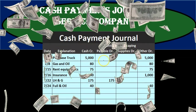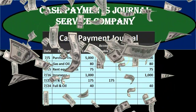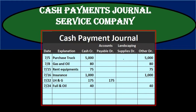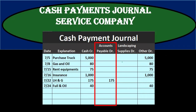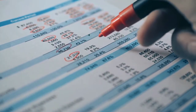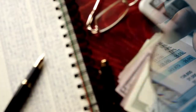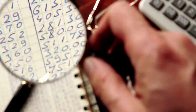The cash payment journal works best when transactions are really the same throughout the time period. For a service company, it might be something like purchasing supplies. If we are always paying off something on account, accounts payable is another typical transaction type. The ones that are not normal — the ones that don't happen regularly — are the ones that are typically more difficult in test-taking situations and in practice.